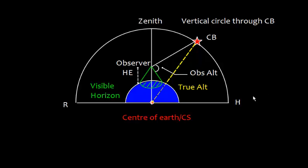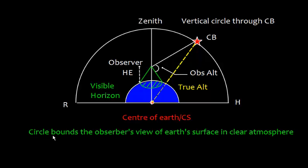In the previous video, I discussed true altitude. Now, first let me define visible horizon. Suppose this is Earth and we have an observer where this one is height of eye. The circle which bounds the observer's view on the Earth's surface in a clear atmosphere is called the visible horizon.